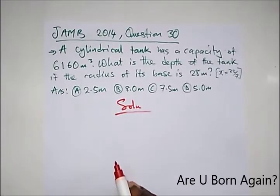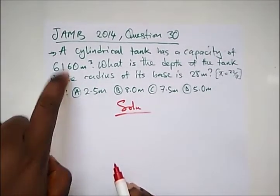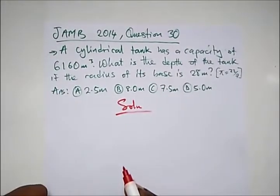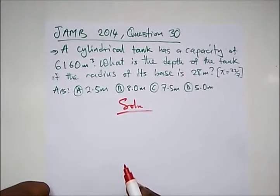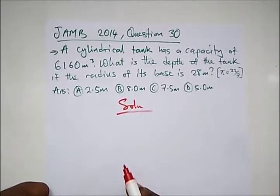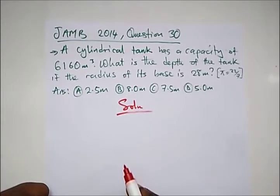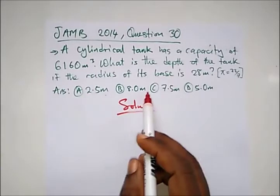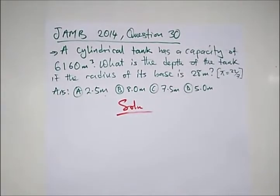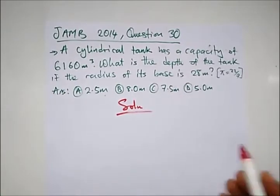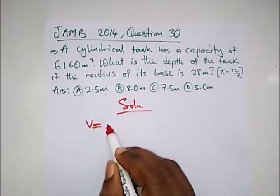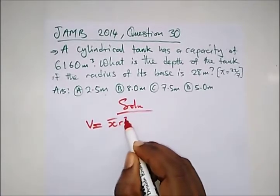The question says: a cylindrical tank has a capacity — that's the volume — and when you see meter cube it's saying volume. What is the depth of the tank if the radius of its base is 28 meters? Our answer is also in meters, so no need to convert. Pi is 22 over 7. The formula for the volume of a cylindrical tank is V = πr²h.